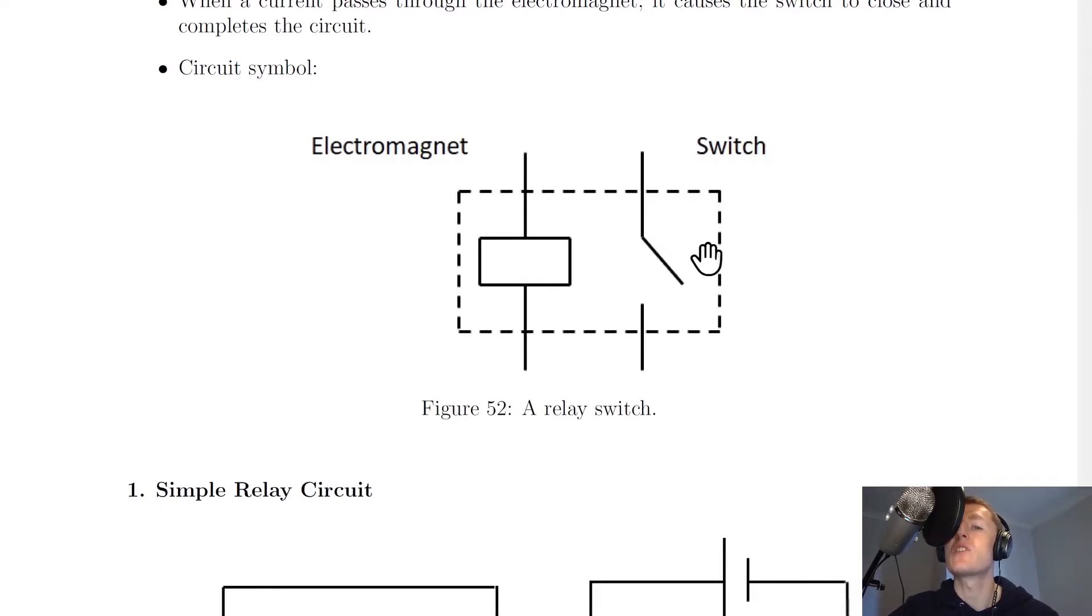And this is the circuit symbol for a relay switch, so you need to be able to identify or draw this. Notice how we've got a box, or a resistor-looking thing here—this is actually your coil or your electromagnet with some wires either side.